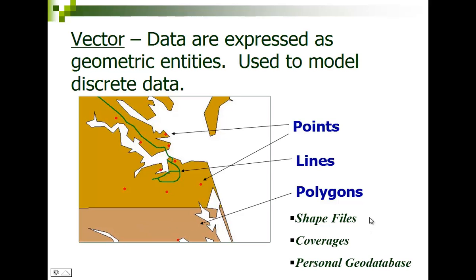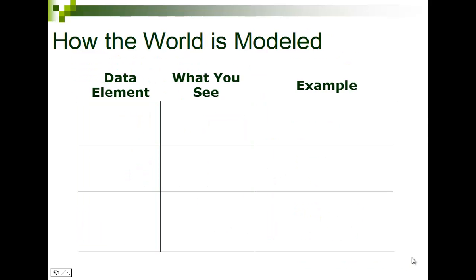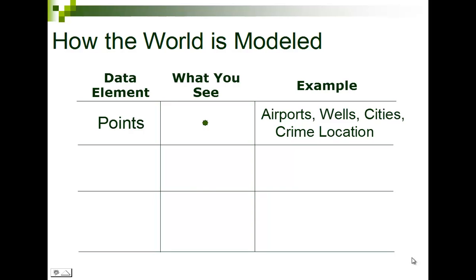Some of the files we have are called shapefiles, coverages, or personal geodatabases, and now we've migrated to something called the file geodatabase. How do we model the world? Discrete points have no dimensions — literally just a latitude and longitude. We might have airports, wells, cities, a crime location. As a social worker, it might be a church, a school, one of your patients, or one of your cases.